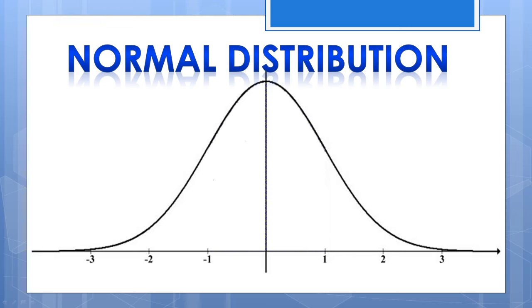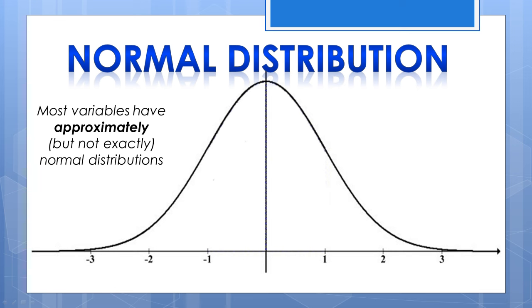The normal distribution is a theoretical concept of how large samples of ratio or interval level data will look once plotted. Since many variables tend to have approximately normal distributions, it is one of the most important concepts in statistics.